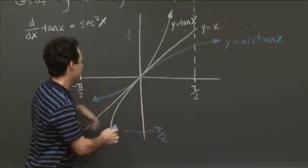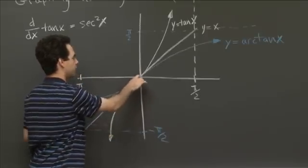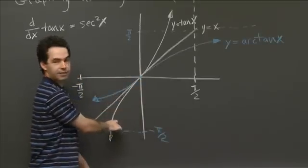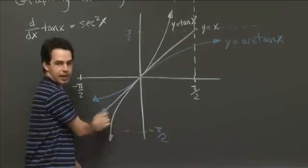And then for negative x, they cross. And so arctan x is larger than x is larger than tan x, when x is less than 0.